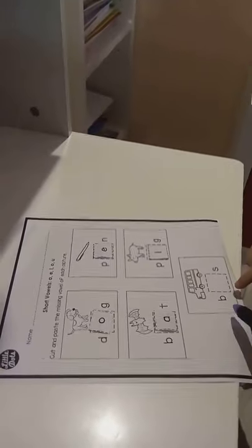And the last one. What is this one? Ba. A. Ch. What is the missing vowel? Short U. Short U.